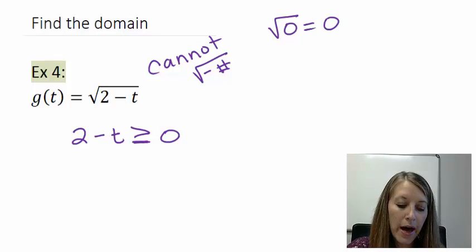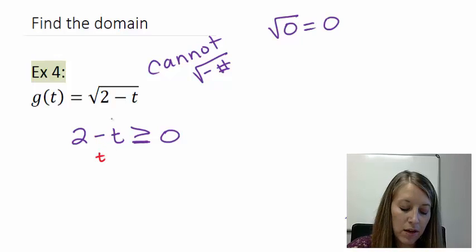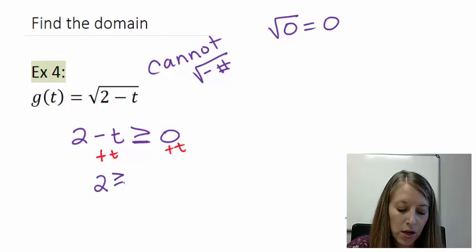I am going to isolate my t by moving it to the other side, adding t to both sides. So that gives me 2 is larger than or equal to t.